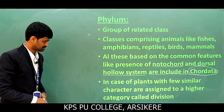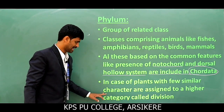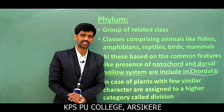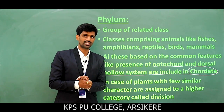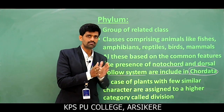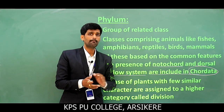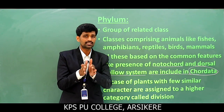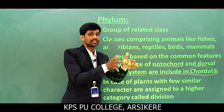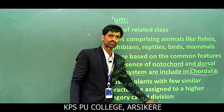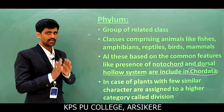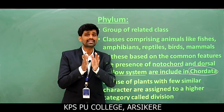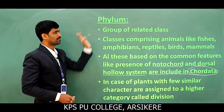In the case of plants, organisms with few similar characters are assigned to a higher category called division. In the hierarchy of classification, phylum is used for animals and division is used for plants. The phylum is nothing but the group of related classes considered as phylum.